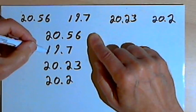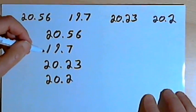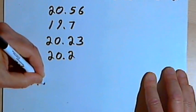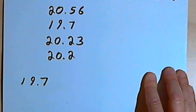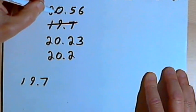So I've got a 2, a 1, a 2, and a 2. That means 19.7 is going to be the smallest of those four numbers. So I can start putting these numbers in order. The smallest number is going to be 19.7, and I'll cross 19.7 off of my vertical column.